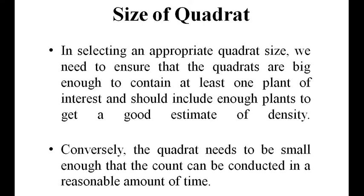The size of quadrats to be used in a given community is determined by constructing a species-area curve. This is done by sampling the vegetation with the nested quadrat method.